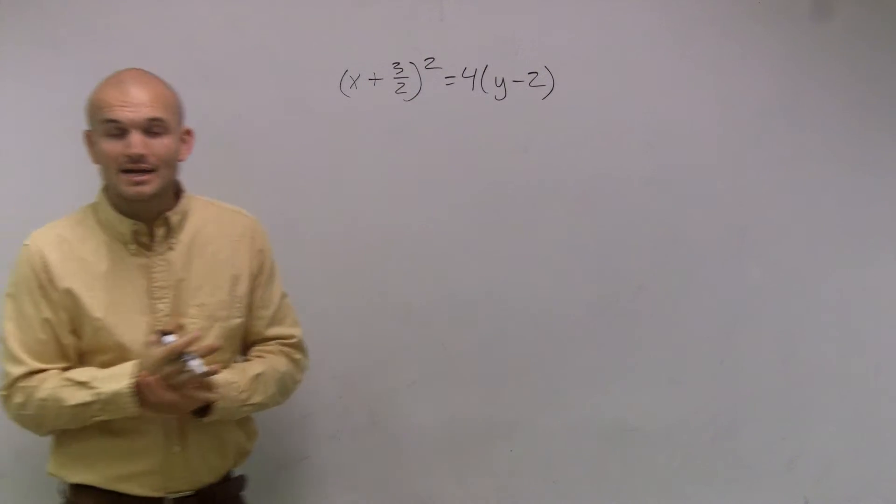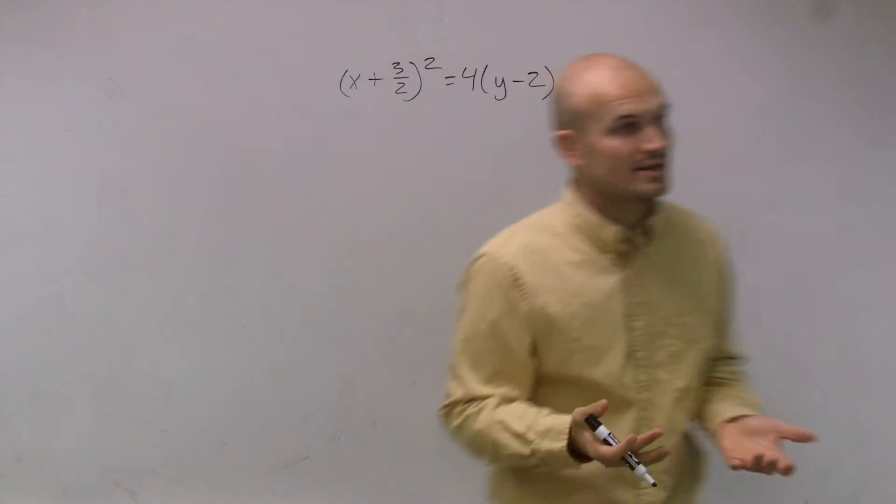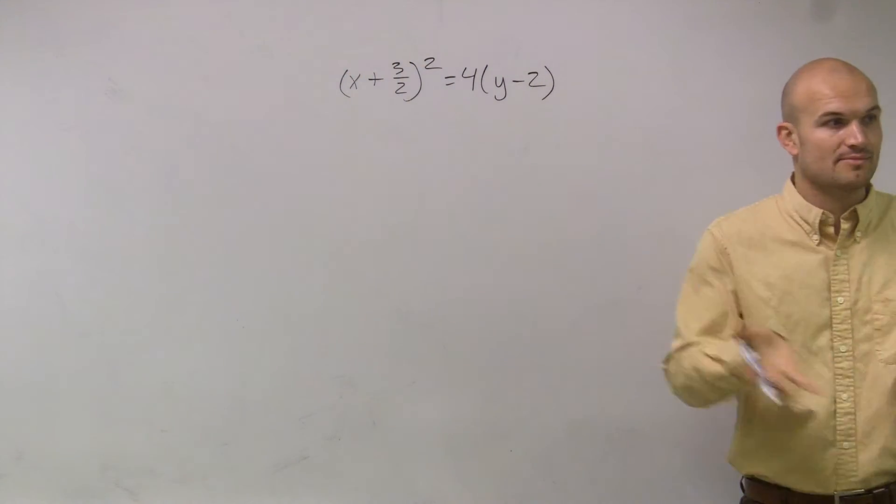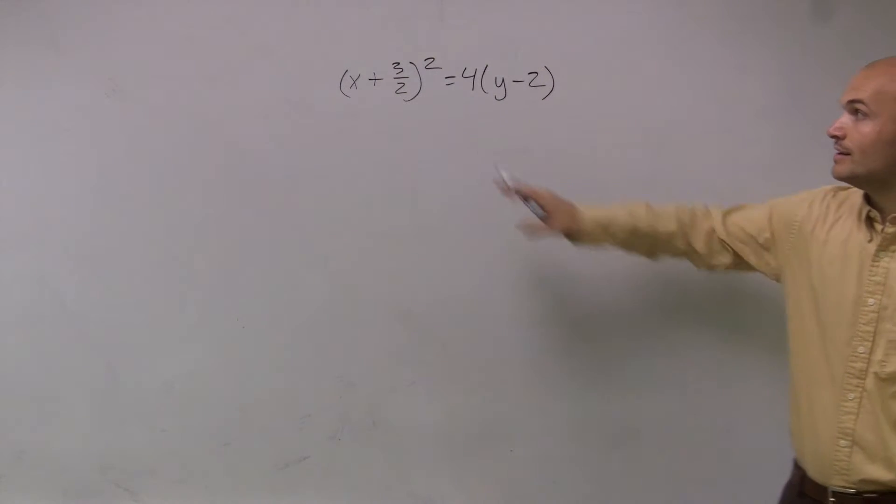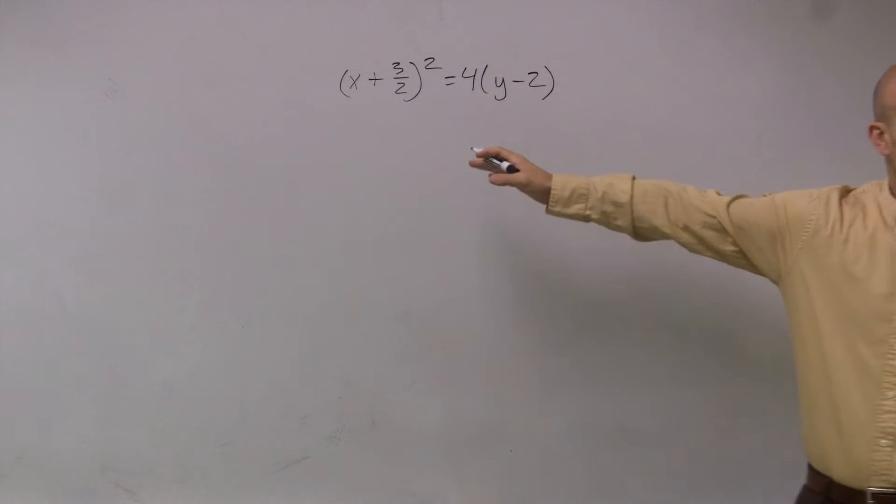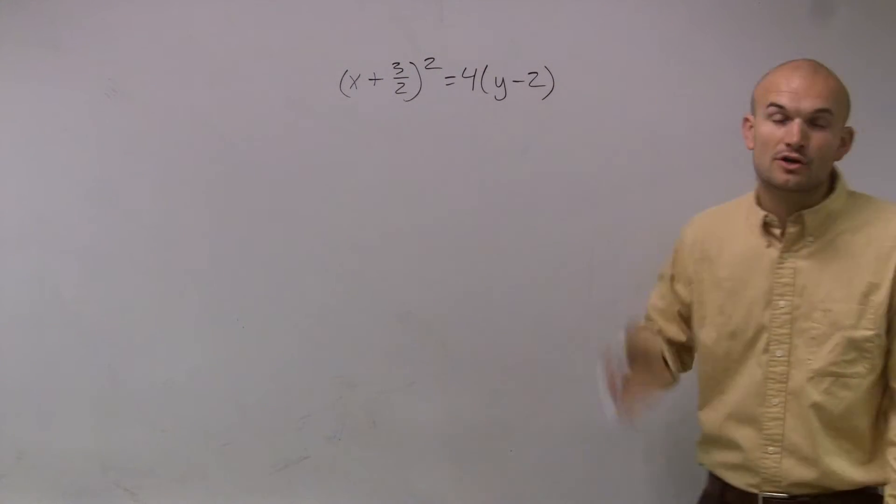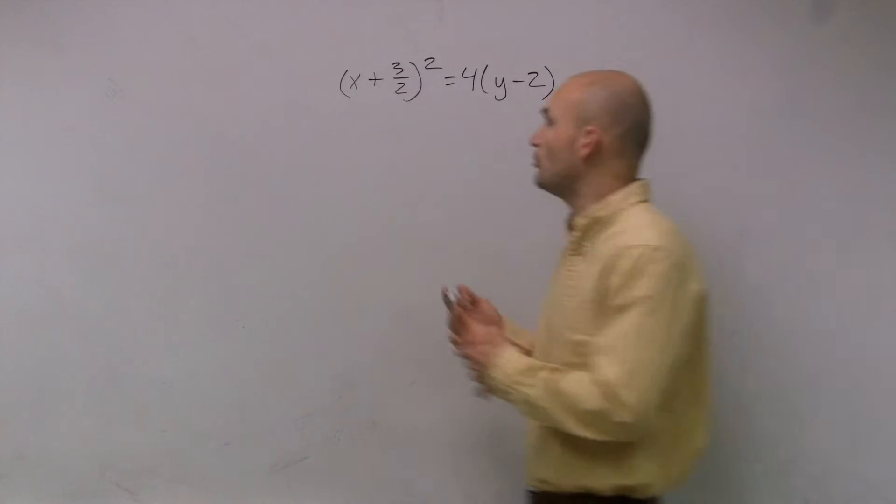Here we have the x term squared. When our x term is squared, that tells us we're either going to have a parabola that opens up or down, or opens left or right. Since the x is squared, that tells me I'm going to have a vertical axis of symmetry. So my parabola is going to open up or down.